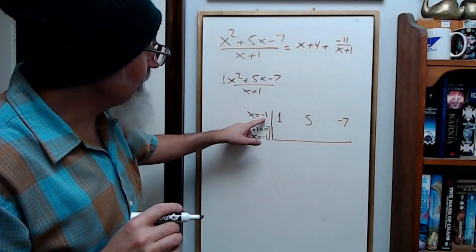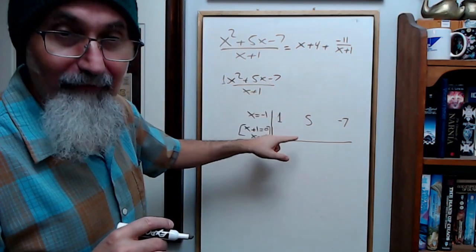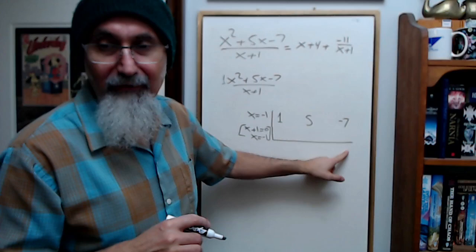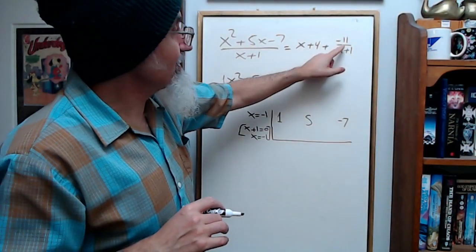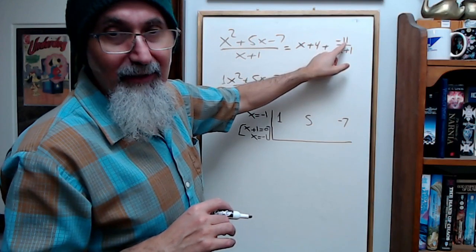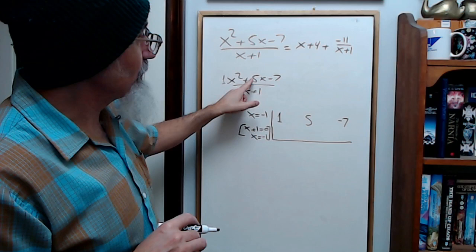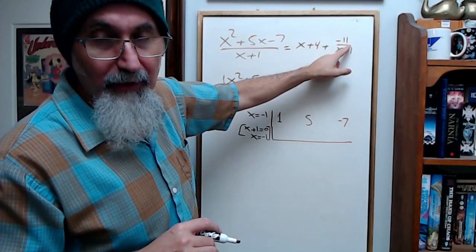What you're really doing is subbing in x equals negative 1 for x, and you're trying to find out what the remainder is. If the remainder is 0, that's the remainder theorem telling you that you're on the x-intercept. In this case, if it happens to be negative 11, that means if x is equal to negative 1 into this polynomial, your y is negative 11. It's a point that you just got.